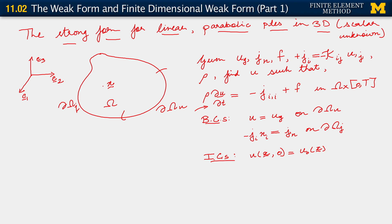So this is what we have, and what we are faced with in this segment is setting up the weak form. We are going to take the approach we'd taken before: we have the strong form, we multiply it by a weighting function and integrate over the domain to get to the weak form — and remember, this is going to be the infinite dimensional weak form.